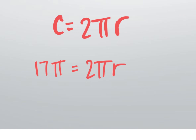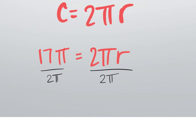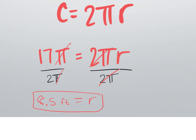How do I solve for r? Divide by 2π. You get 17π over 2π. The pi's cancel out, leaving 17 divided by 2 — which is 8.5. So the radius is 8.5 feet. What's the diameter? 17. How do you get from radius to diameter? Multiply by 2.